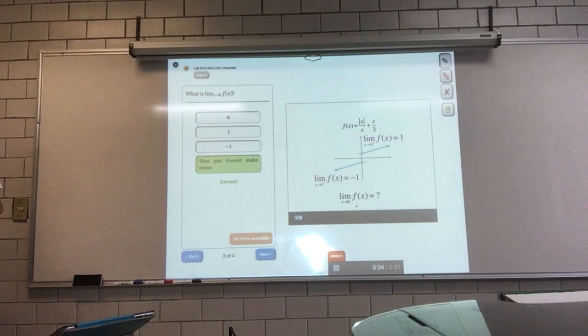No matter how close we try to make x to 0, say we try to put it inside some small interval here, there will always be some values where f of x is near 1, and other values where f of x is near negative 1. So it's not possible to squeeze f of x to be close to any single value. When that's the case, we say the limit doesn't exist.